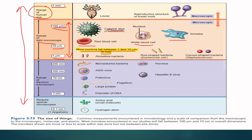In this size range of 1 to 10 micrometers, all bacterial sizes are covered. This includes Rickettsia bacteria, rod-shaped bacteria like E. coli, and coccus-shaped bacteria like Staphylococcus. All are present in this size range of 1 micrometer to 10 micrometers.